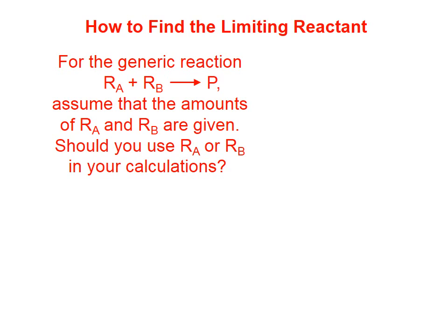In what I call straight stoichiometry calculations, we are just given the amount of one reactant and we're told that we have excess of everything else. Well, if the amounts of two reactants are given, one of them is a limiting reactant, the other is an excess reactant. And the amount of product is going to depend not on the excess reactant, but on the limiting reactant.